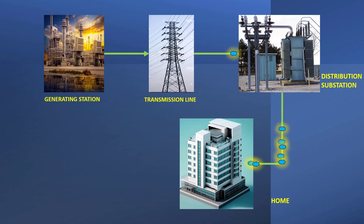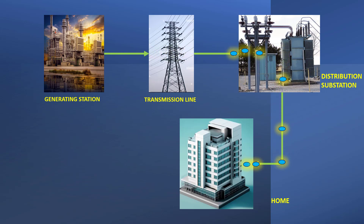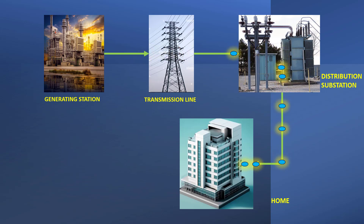Transmission lines may be either underground or overhead. In the distribution substation, we reduce the voltage from 220 kV or higher to 430 volts, which is the standard three-phase voltage. You may see a distribution substation in a high-rise building or in your apartment complex.